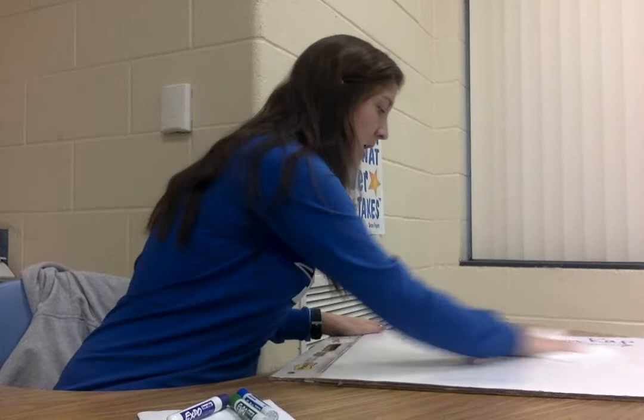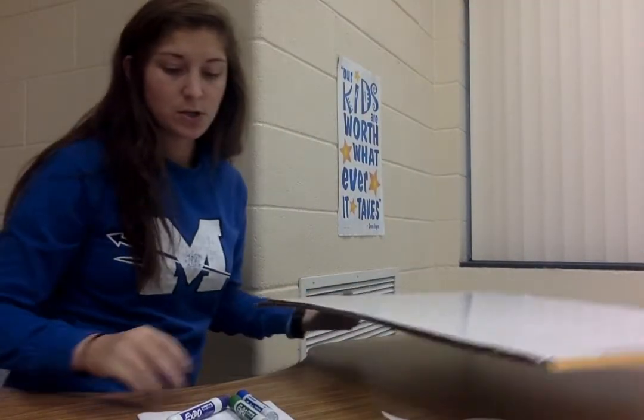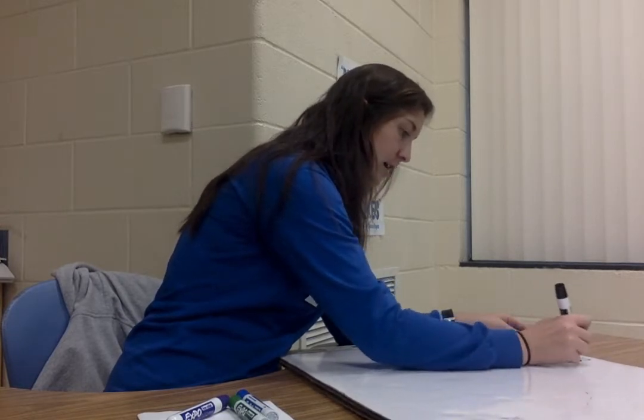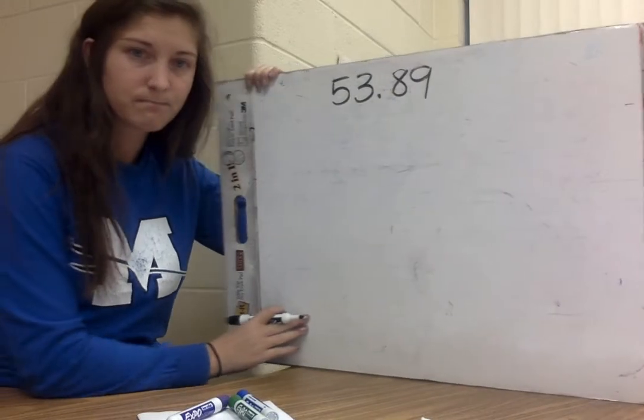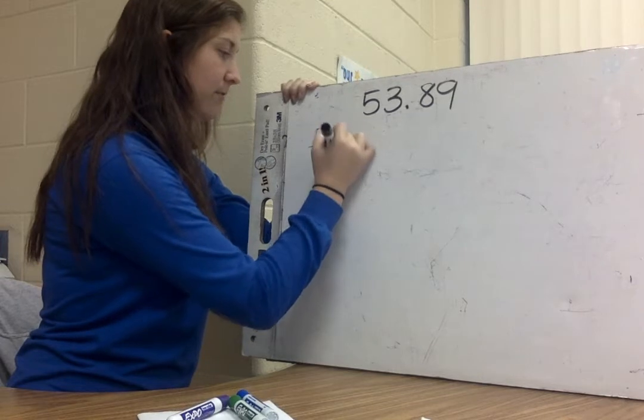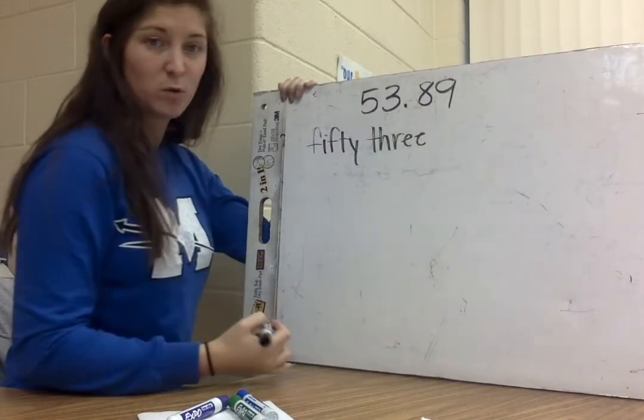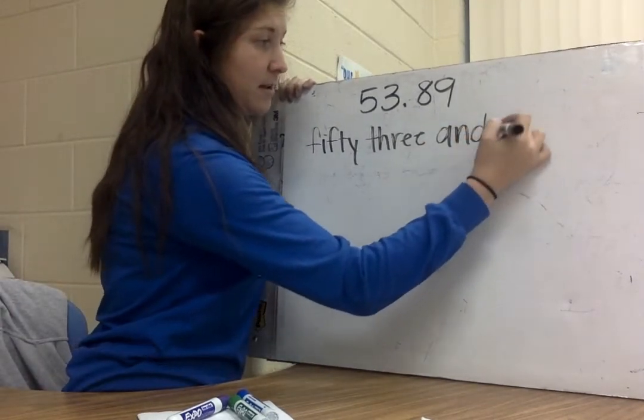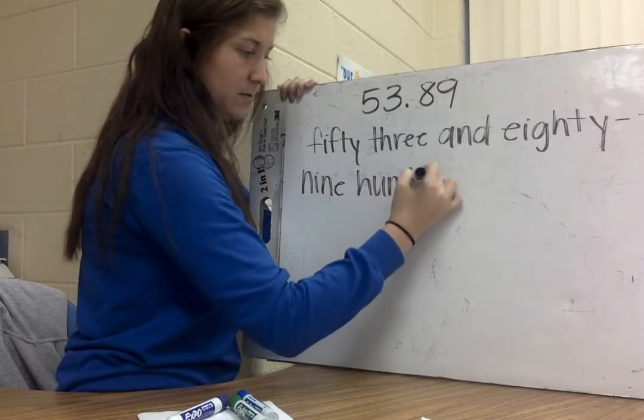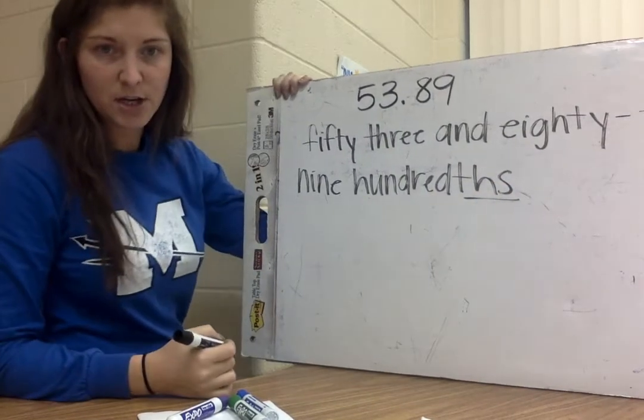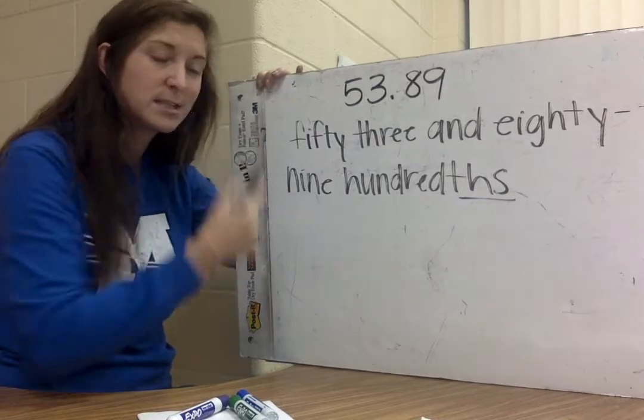The last part to our standard was learning how to read, write, and compare those decimals. So, we talked about word form, expanded form, those things. I am going to write a number here. My number is 53.89, and I need to write that in word form. So, I have 53, my decimal point, I have to say it as 'and', 89 hundredths. And I always have to remember that I have to put that THS on the end of the hundredths place. That's how I differentiate it from the hundreds place. That is a whole number piece.